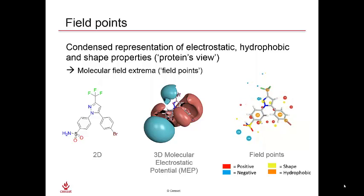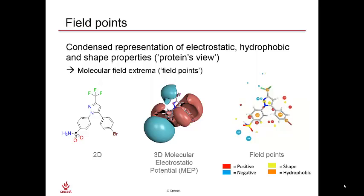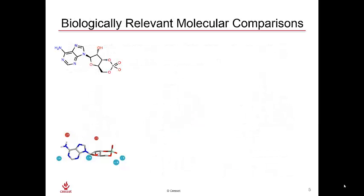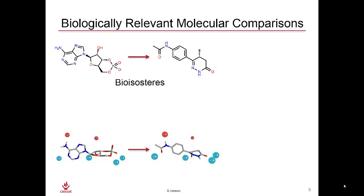provided, of course, the protein receptor has a complementary feature. It is also noteworthy to say that just because a field point doesn't appear, it doesn't mean there's no field at that point in space — it's simply that the field is not at a maximum value at that point. With Cresset software, we use these 3D field point patterns to compare molecules in a biologically relevant way, the way that a receptor would experience the ligands.